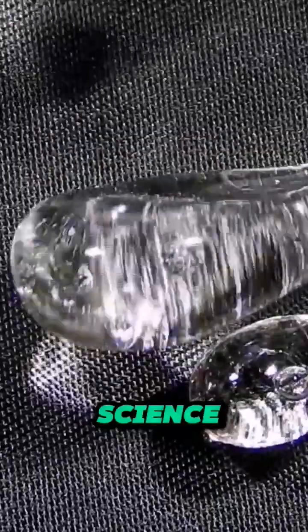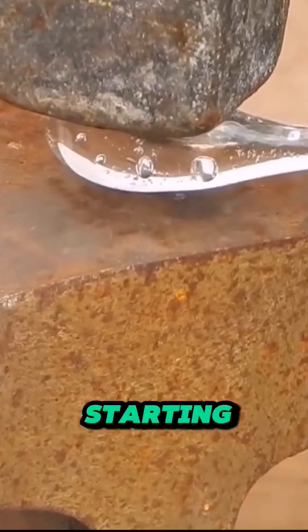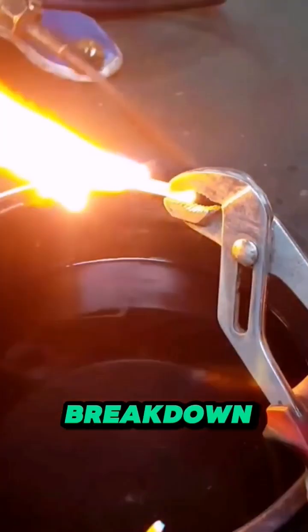This passage explains the history and science behind bulletproof materials, using Prince Rupert's drops as an interesting starting point. Here's a breakdown of the key points.